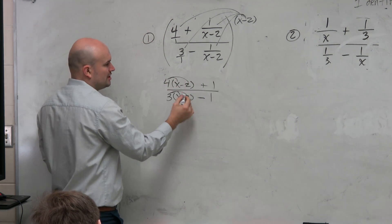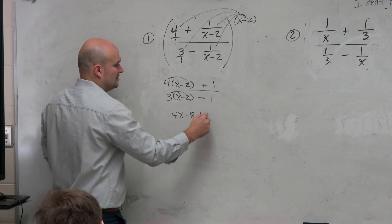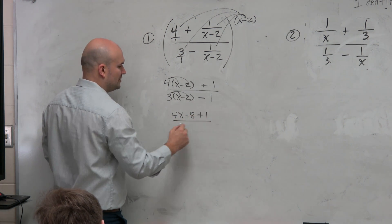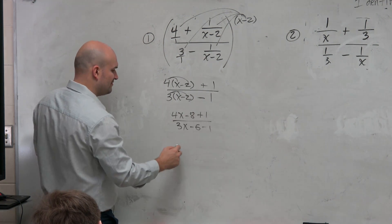Now I'm just going to apply the distributive property to get rid of my parentheses. So I get 4x minus 8 plus 1, and then all over 3x minus 6 minus 1. And then I can simplify this one more time.